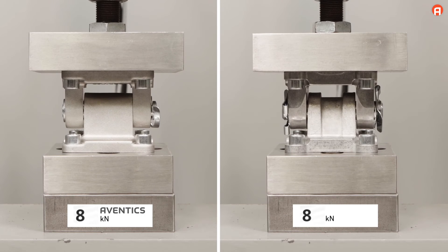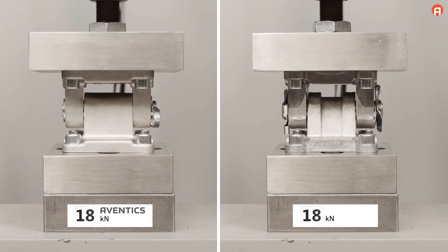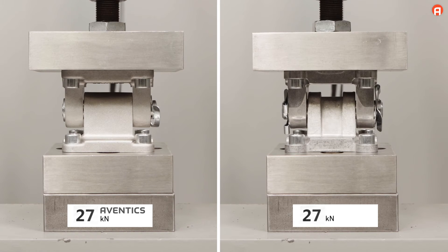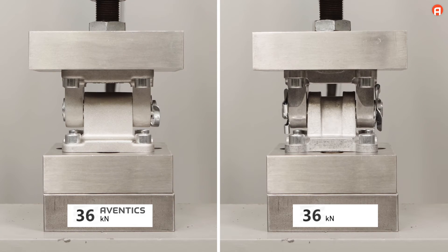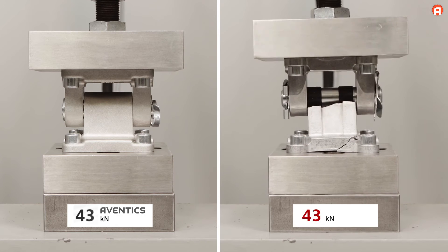The second experiment with another die-cast aluminum competitor product. The cast aluminum mounting breaks at only 43 kN.